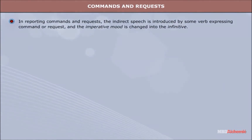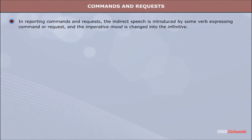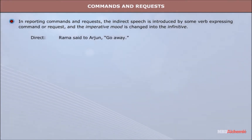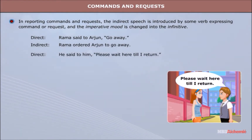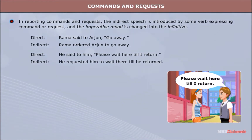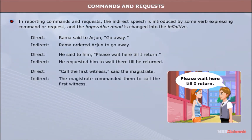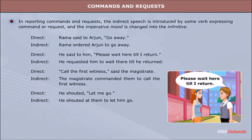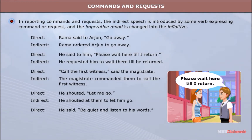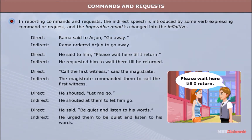Commands and Requests: In reporting commands and requests, the indirect speech is introduced by some verb expressing command or request, and the imperative mood is changed into the infinitive. Direct: Rama said to Arjun, 'Go away.' Indirect: Rama ordered Arjun to go away. Direct: He said to him, 'Please wait here till I return.' Indirect: He requested him to wait there till he returned. Direct: 'Call the first witness,' said the magistrate. Indirect: The magistrate commanded them to call the first witness. Direct: He shouted, 'Let me go.' Indirect: He shouted at them to let him go. Direct: He said, 'Be quiet and listen to his words.' Indirect: He urged them to be quiet and listen to his words.